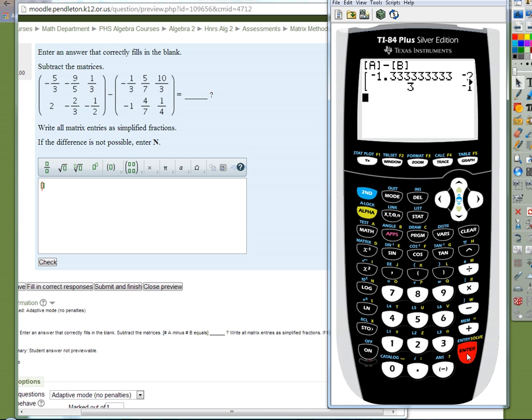Just like we can do with numbers, we want to turn a decimal number into a fraction, we can do the same thing with matrices by just going to the math screen, choosing the first option to convert to fraction. And then it says answer, convert it to fraction, that's what we want to do, so we just hit enter. So math, enter, enter, and look what it does, makes them all fractions, which is good, because notice what Moodle is expecting you to do. It wants you to write all matrix entries as simplified fractions.